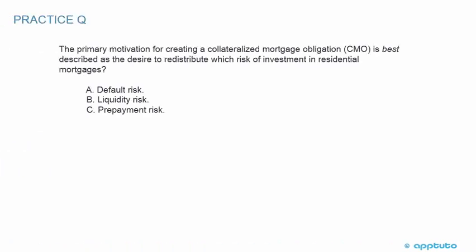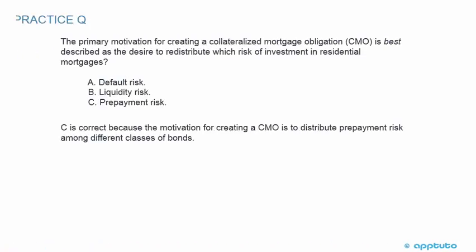Another practice question: The primary motivation for creating a collateralized mortgage obligation (CMO) is best described as the desire to redistribute which risk of investment in residential mortgages? A. default risk; B. liquidity risk; or C. prepayment risk. C is correct because the motivation for creating a CMO is to distribute prepayment risk among different classes of bonds.